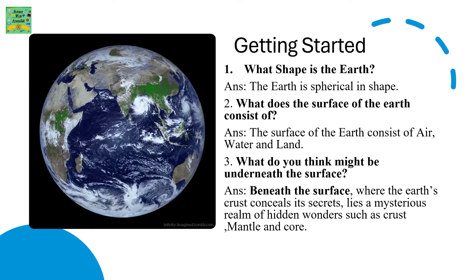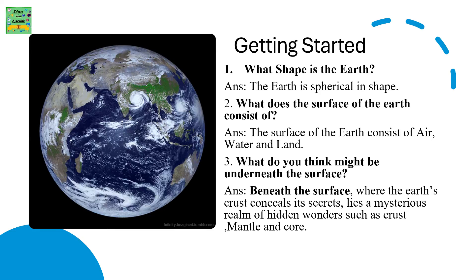What shape is the Earth? The Earth is spherical in shape. What does the surface of the Earth consist of? The surface of the Earth consists of air, water and land.